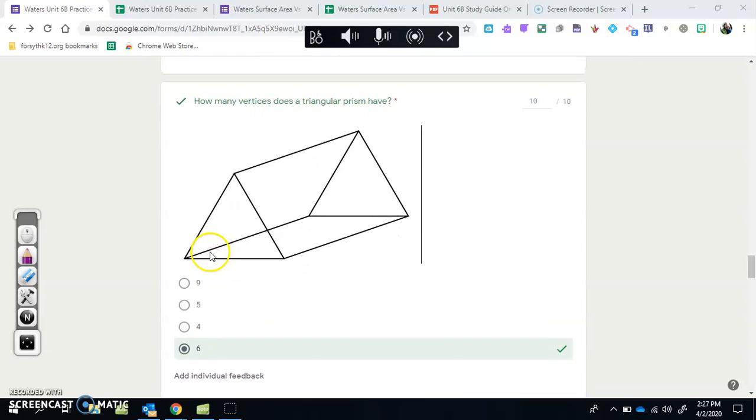This one, most people have gotten it after we talked about what vertices were. Remember the vertices are the corners, so there's six.